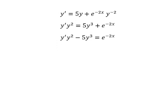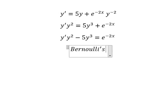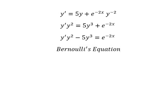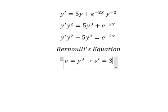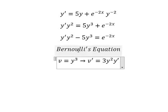This is about Bernoulli's equation. So I will put v equals to y to the power of 3. We need to first take the derivative for both sides and we have like this. Because we don't have number 3, so we divide both sides by number 3.